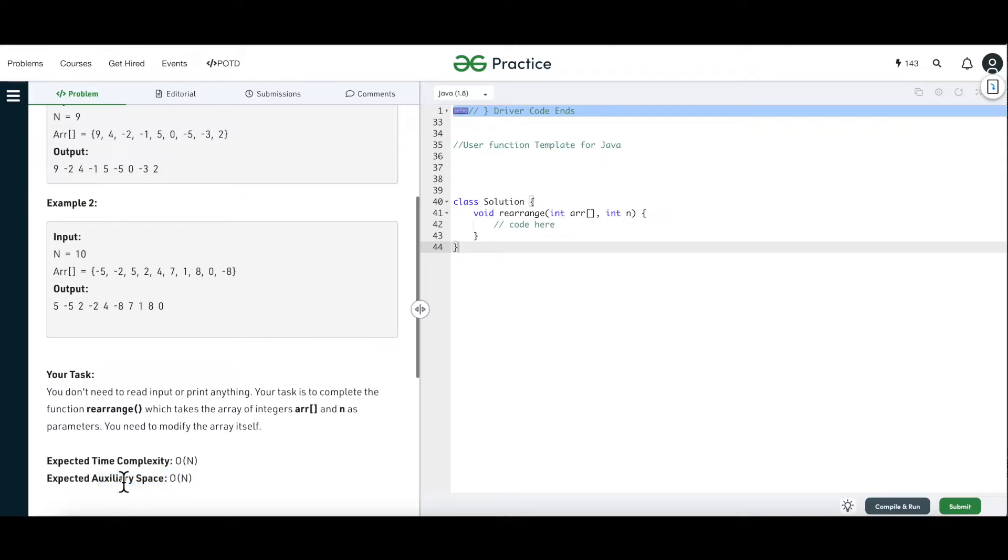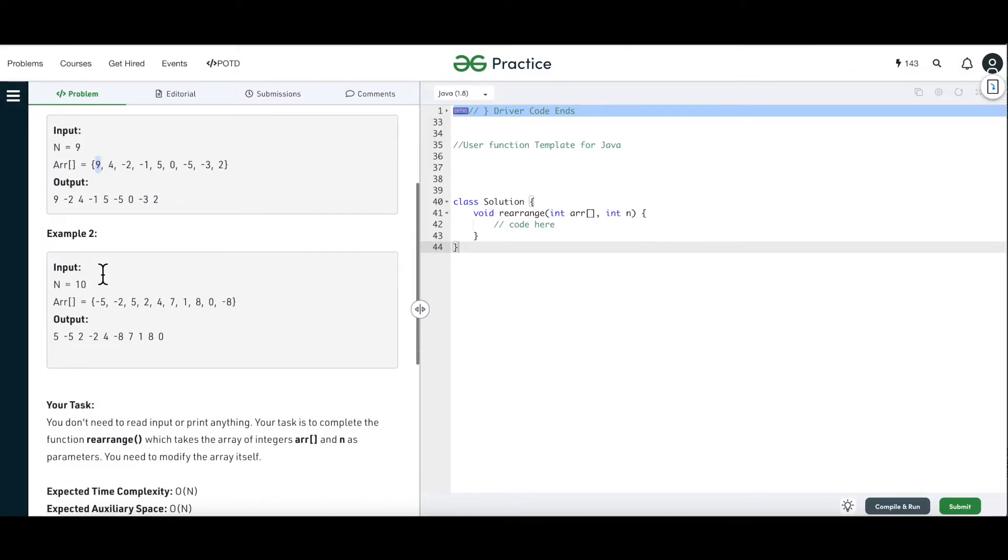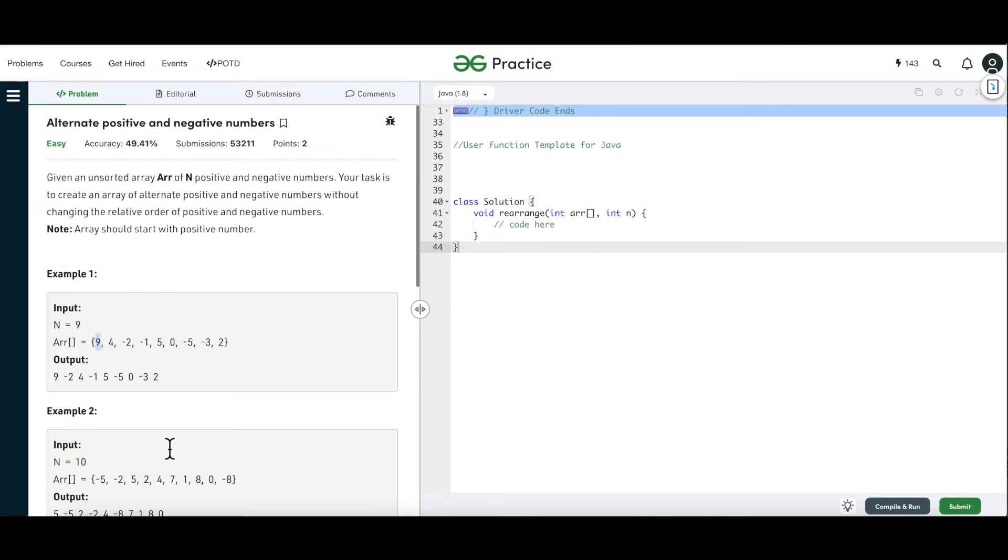But this should not be misleading to you that just because we are given an auxiliary space of N we will be creating another new array and then putting the elements one by one into that. That is not the case. If that was the case, it would have been very easy. Create just an array and then iterate through that array and put the numbers in its right place. But that is not what we are supposed to do. We have to modify the array itself. It is called in-place modification of the array. So with that, let's try to see how can we solve this.